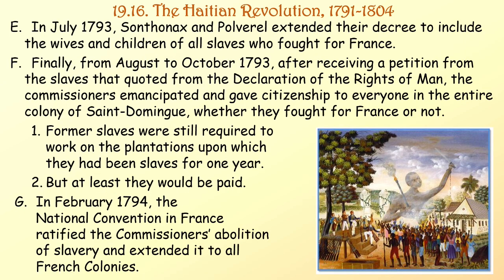In July 1793, Santanax and Polverel extended their decree to include the wives and children of all slaves who fought for France. Then from August to October 1793, after receiving a petition from slaves quoting the Declaration of the Rights of Man, the commissioners emancipated and gave citizenship to everyone in the entire colony of Saint-Domingue, whether they fought for France or not. Former slaves were still required to work on their former plantations for one year, but at least they would be paid. In February 1794, the National Convention ratified the commissioners' abolition of slavery and extended it to all French colonies.